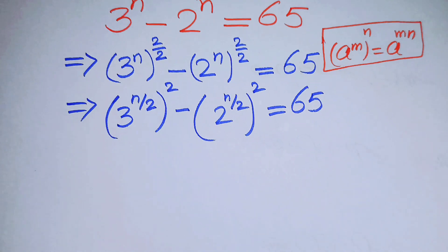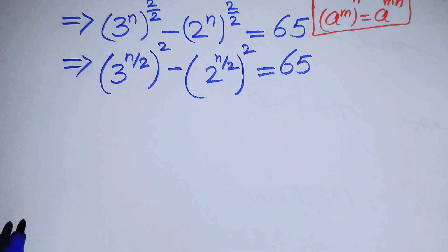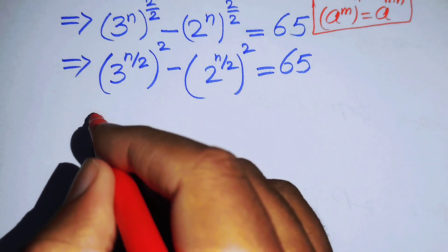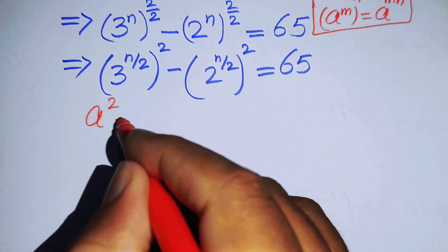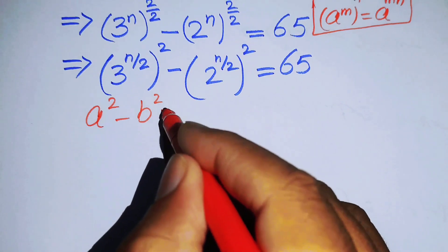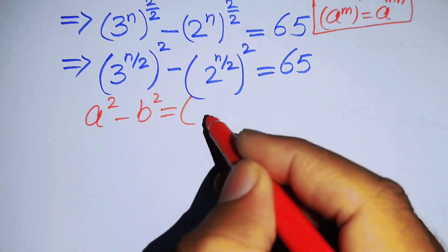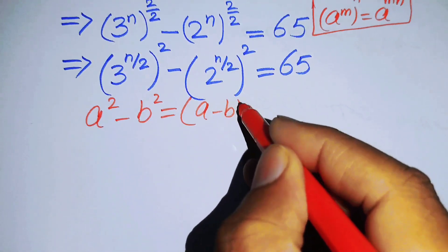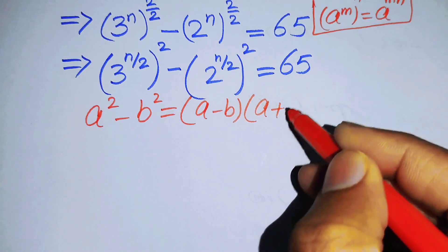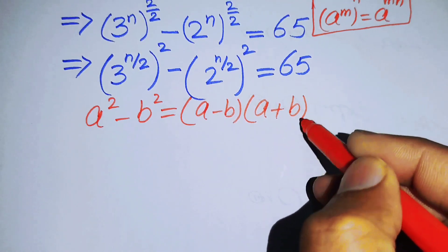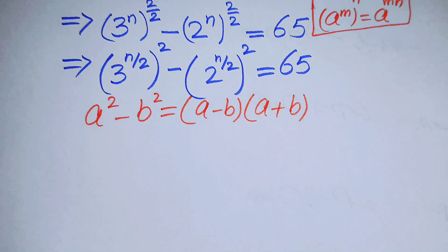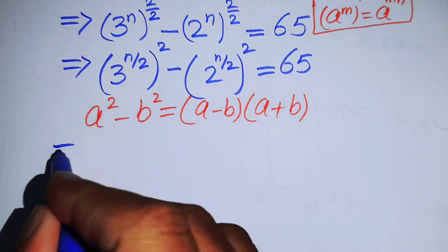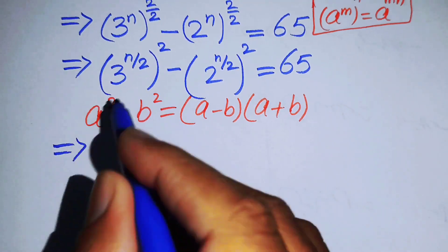In the next step, this becomes a difference of squares. You know the formula: a squared minus b squared equals (a minus b) times (a plus b). We now apply this formula to the above term.